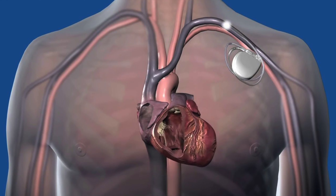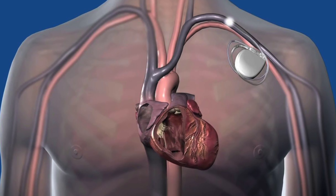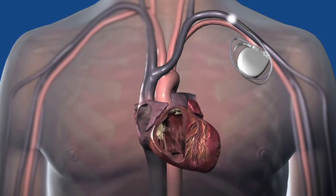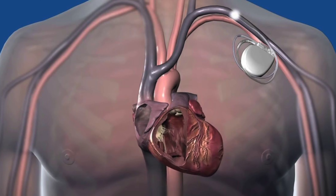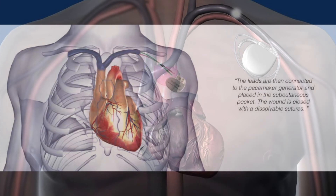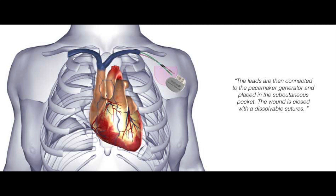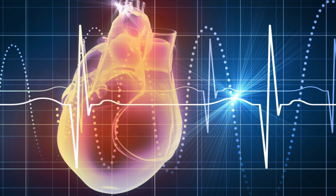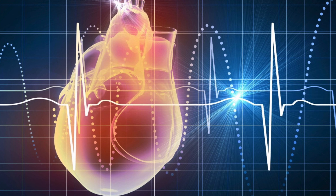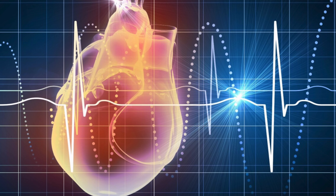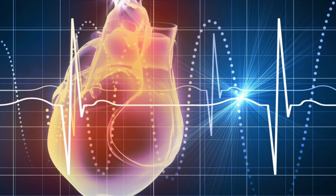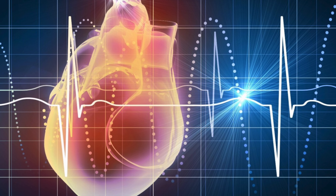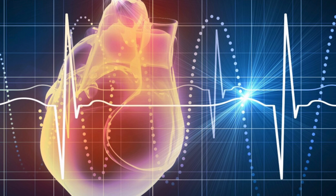A pacemaker is a device that sends small electrical impulses to the heart muscle to maintain a suitable heart rate. Pacemakers are implanted in people with AFib who have a slow heart rate. The pacemaker has a pulse generator and leads or wires that send impulses to the heart muscle and also sense the heart's electrical activity. The generator houses the battery and a tiny computer, and newer pacemakers have sophisticated features to help manage arrhythmias and optimize heart rate function.